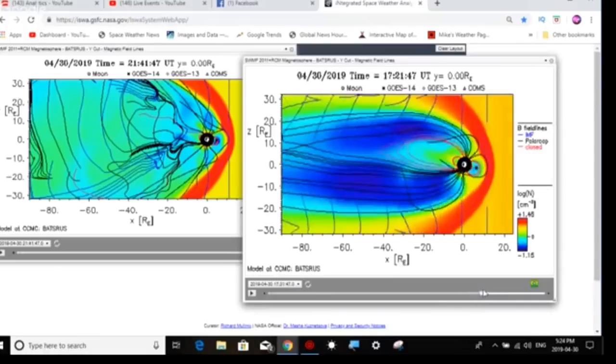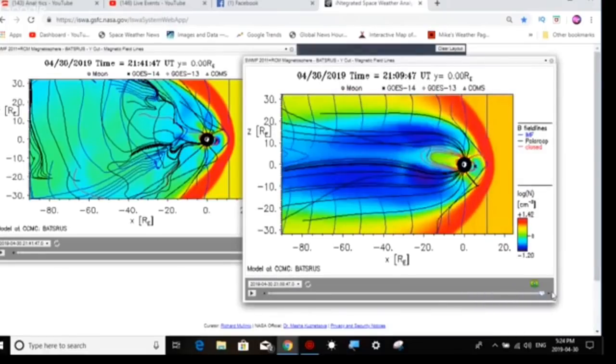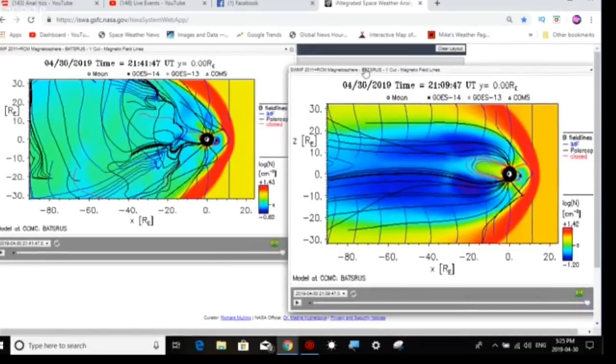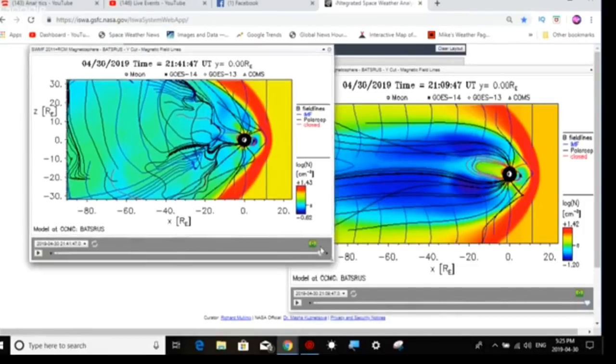But we're not supposed to have energy coming at the backside of our Sun—at least not this much. I've never seen anything like this. Can anybody else explain this? This is an anomaly.